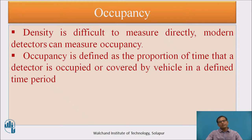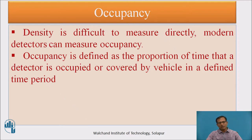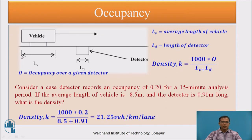Since it is very difficult to measure density directly on the field, if modern detectors are available, we can measure occupancy and derive density from it. Occupancy is defined as the proportion of time that a detector is occupied or covered by a vehicle in a defined time period. Magnetic detectors are placed on the road surface, and from the proportion of time a vehicle occupies the detector, we can find the density. The formula is: K = 1000 × O / (LV + LD), where LV is the average vehicle length in meters, LD is the detector length, and O is the occupancy over a given detector.